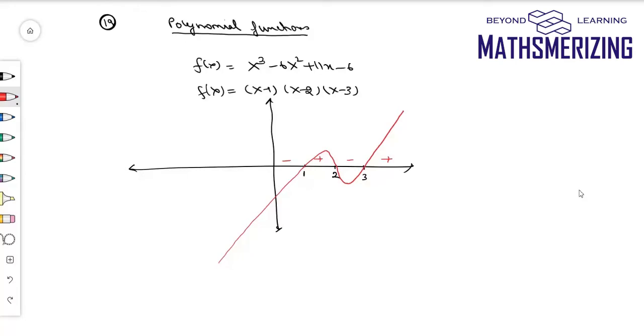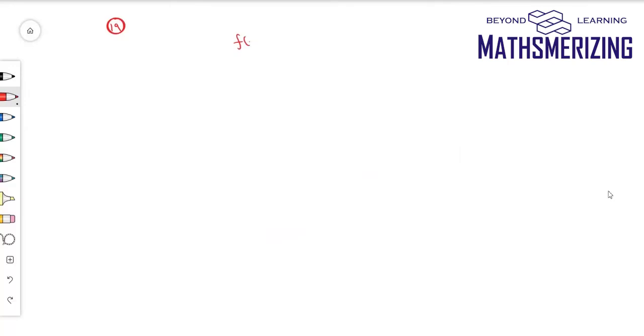I will take another example. Suppose I have to draw the graph of f(x) equals (x-1)(x-2) squared (x-3). So again, I will mark these points. So this is 1, this is 2, and this is 3.